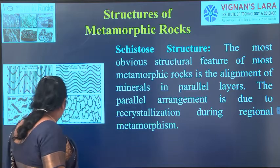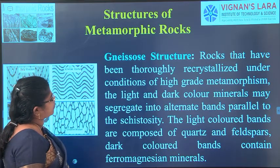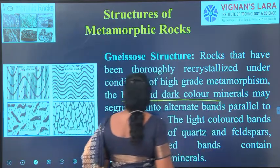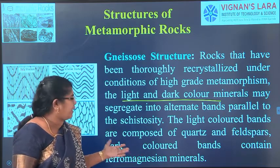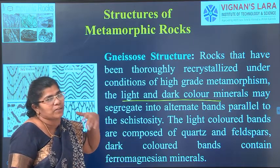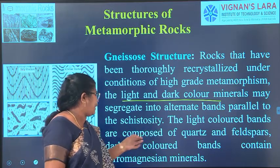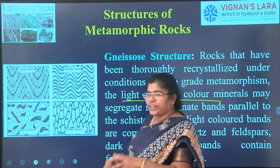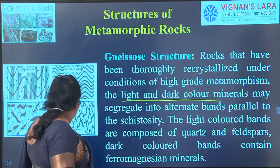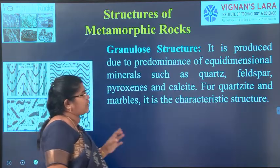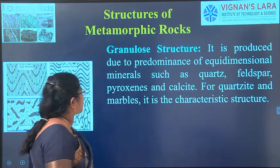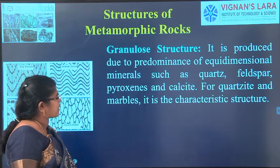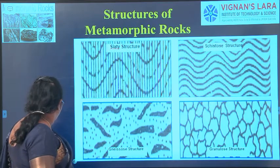Gneissic structure: recrystallization occurs under conditions of high-grade metamorphism. Light and dark colored minerals segregate into alternate bands parallel to the schistosity. The light-colored bands are composed of quartz and feldspar and the dark-colored bands are composed of ferromagnesian materials. Granular structure is made up of granules — equidimensional minerals such as quartz, feldspar, pyroxene, and calcite. For quartzite and marbles it is a characteristic structure. You can see all four types of structures here.